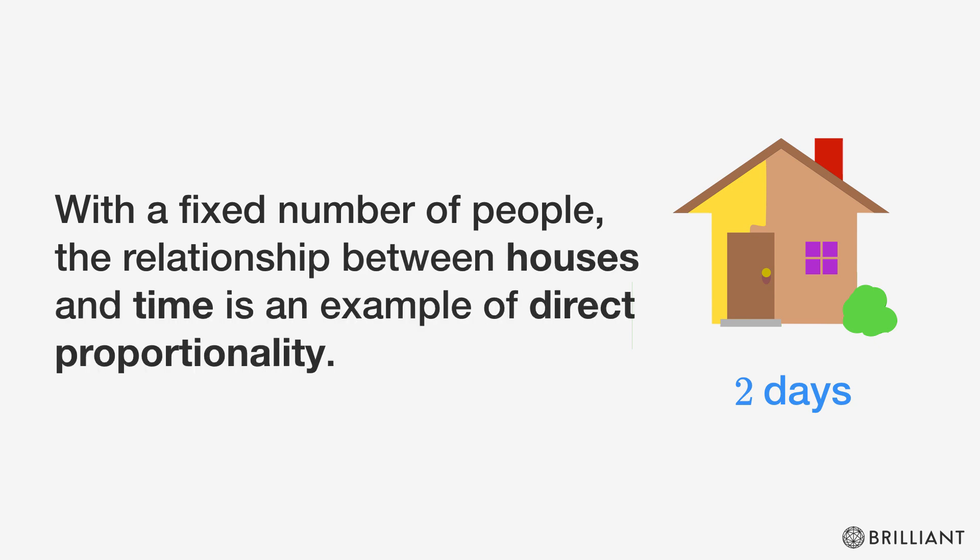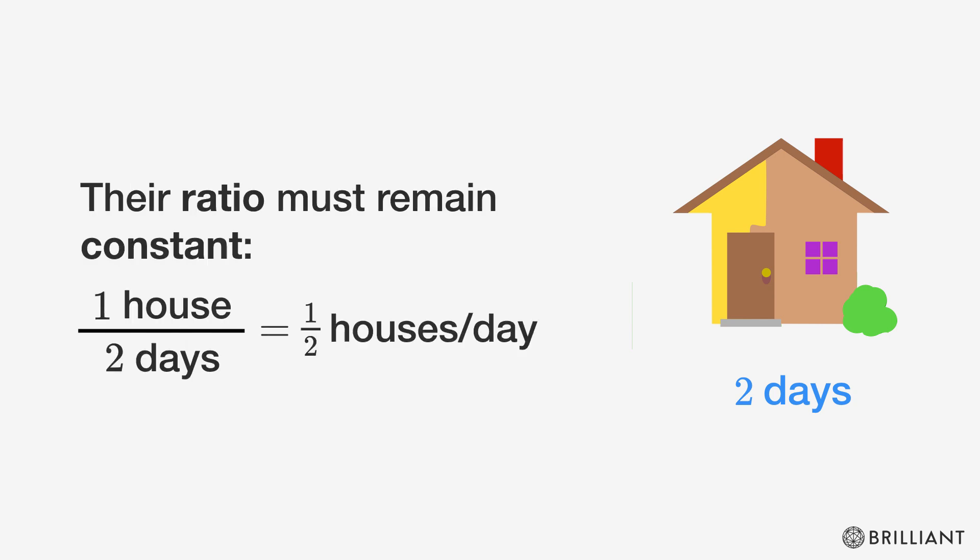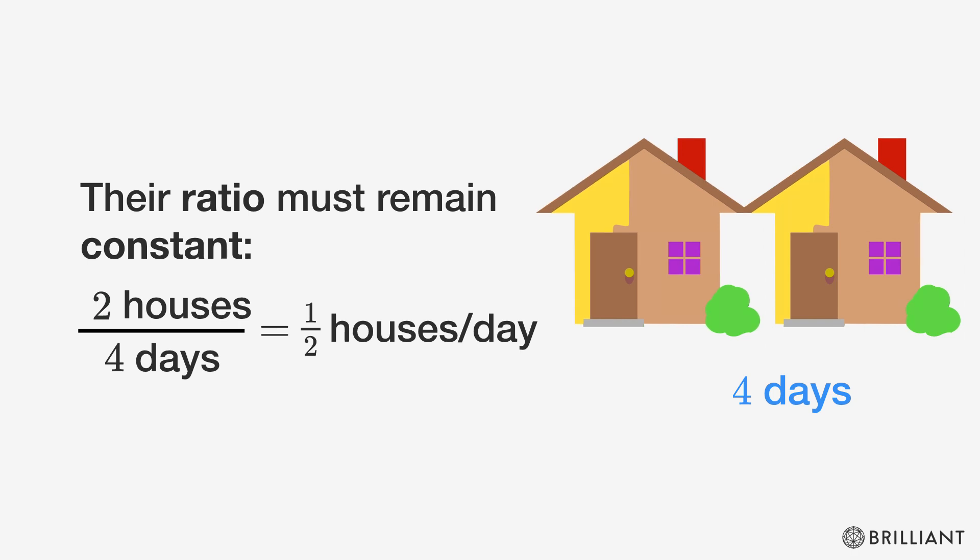With a fixed number of people, the relationship between houses and time is an example of direct proportionality. This means their ratio must remain constant. One house over two days has the same ratio as two houses over four days.